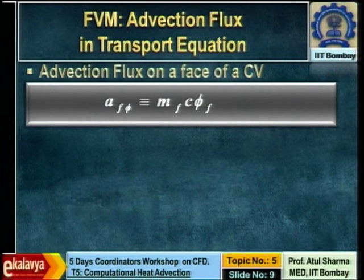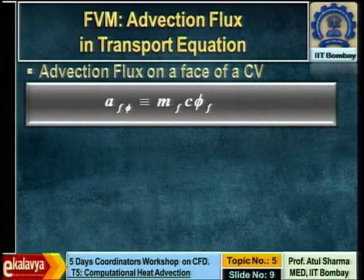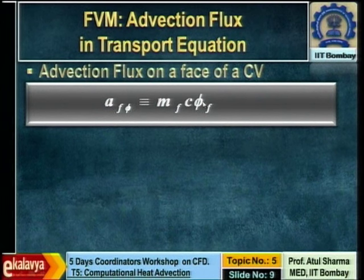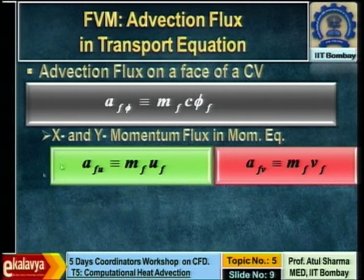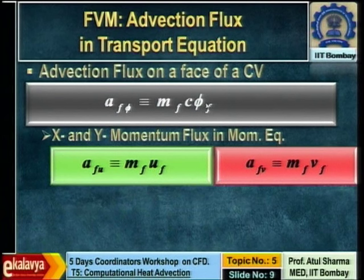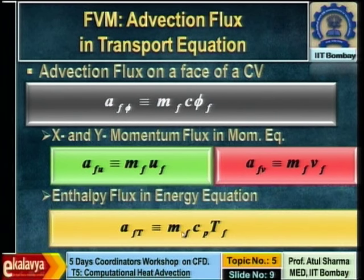Advection flux is the product of mass flux and C, where C is 1 for fluid flow and specific heat for heat transfer, times phi, the advected variable. There are two variables in advection: the advecting variable acts like a driver and the advected variable acts like a passenger. Phi is u for x-momentum, v for y-momentum, and temperature for the energy equation.